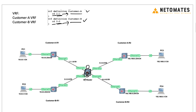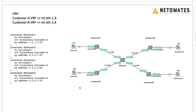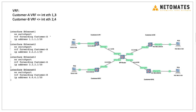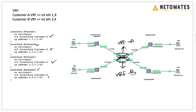Once we define the two VRFs, the router is now divided into three parts: default, VRF A, and VRF B — three routing tables. The next step is moving the interfaces into the respective customer VRFs. Customer A is connected on Ethernet 1 and Ethernet 3, so we move those two interfaces to VRF A using the command 'ip vrf forwarding customer-A' on each interface. Similarly, Customer B connects on Ethernet 2 and Ethernet 4, so those are added to VRF B.